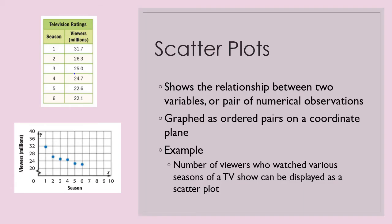When we're looking at scatterplots, a scatterplot shows a relationship between two variables or pair of numerical observations. So for instance, television ratings. So in season one, we can say there was 31.7 million viewers. However, in season six, there was only 22.1 million viewers.